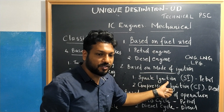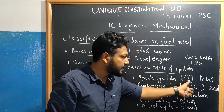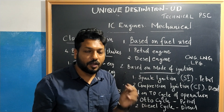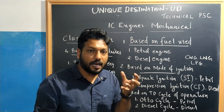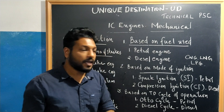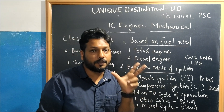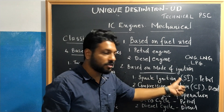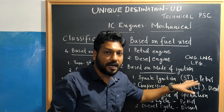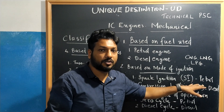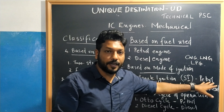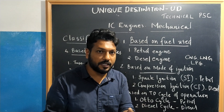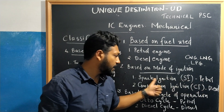The first mode is spark ignition engines, called SI engines. In a spark ignition engine, fuels like petrol or LPG are used in the vapor state, and a small spark is used to ignite the fuel mixture. That is why petrol engines are called spark ignition engines — because they use a spark to burn the fuel.